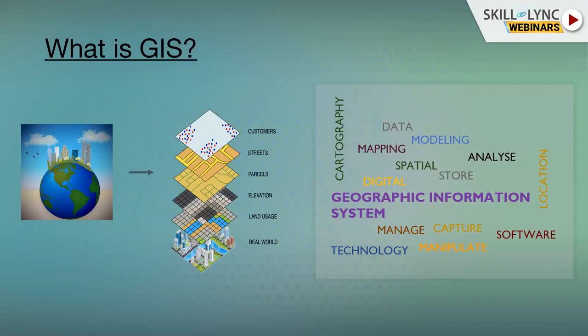GIS stands for Geographic Information System. Map-making is called cartography — there are different procedures, methods, and concepts in cartography. But GIS is a more digital form of it, where you map and link information to it, then query that information to get your required output.